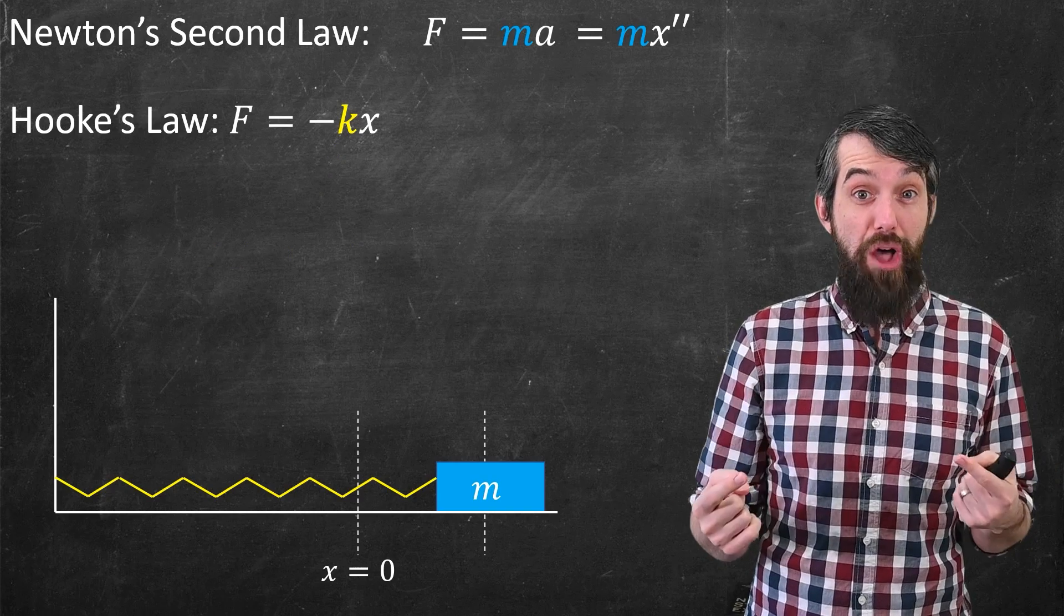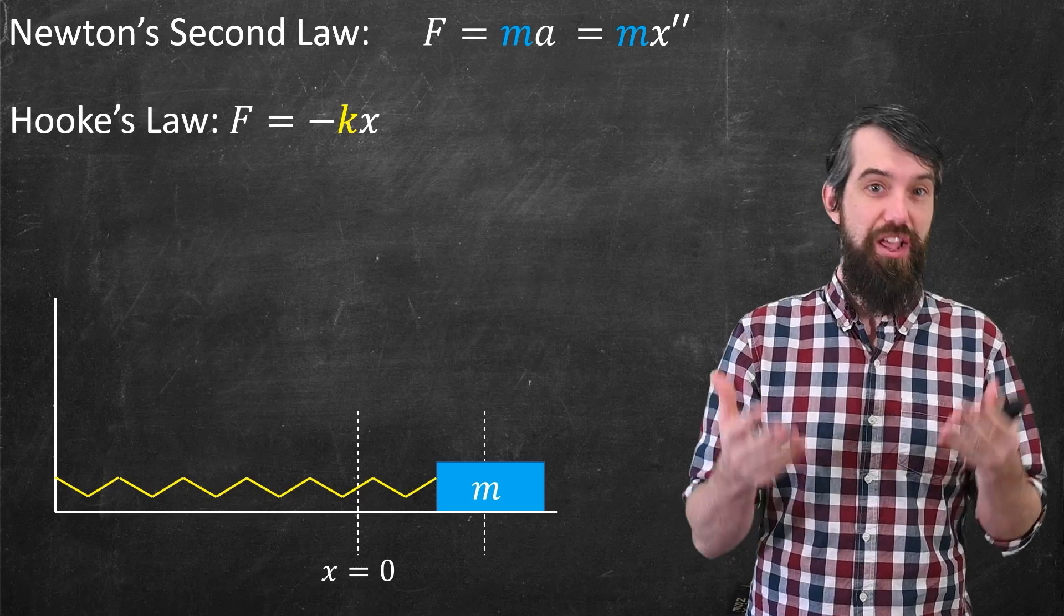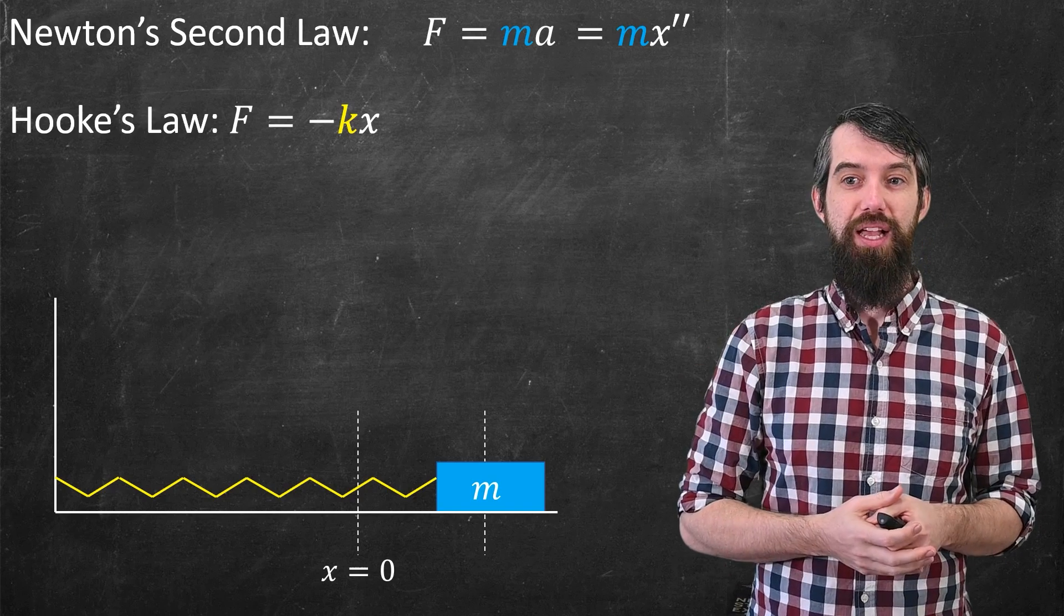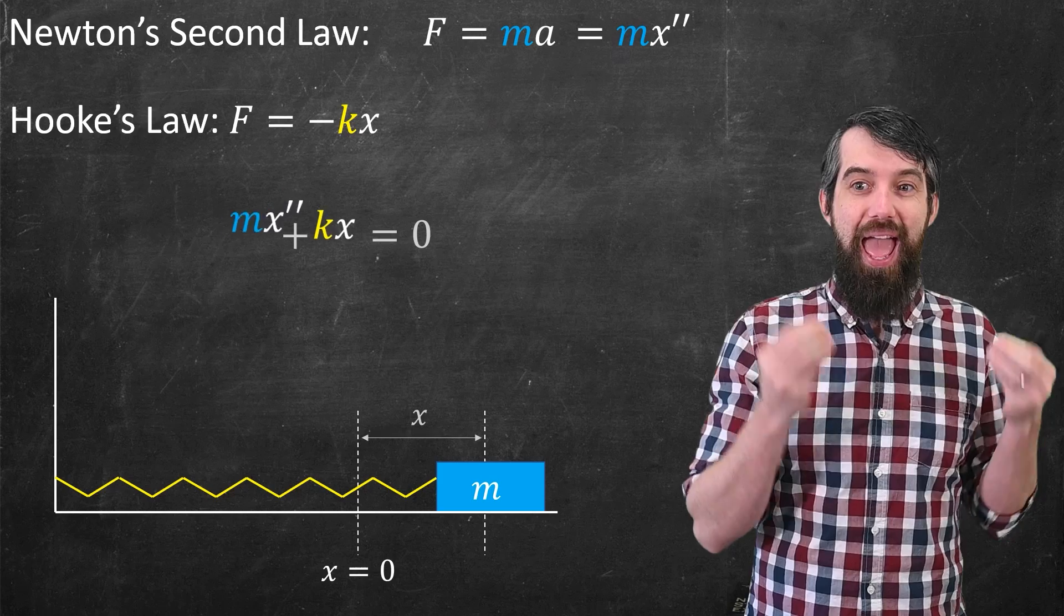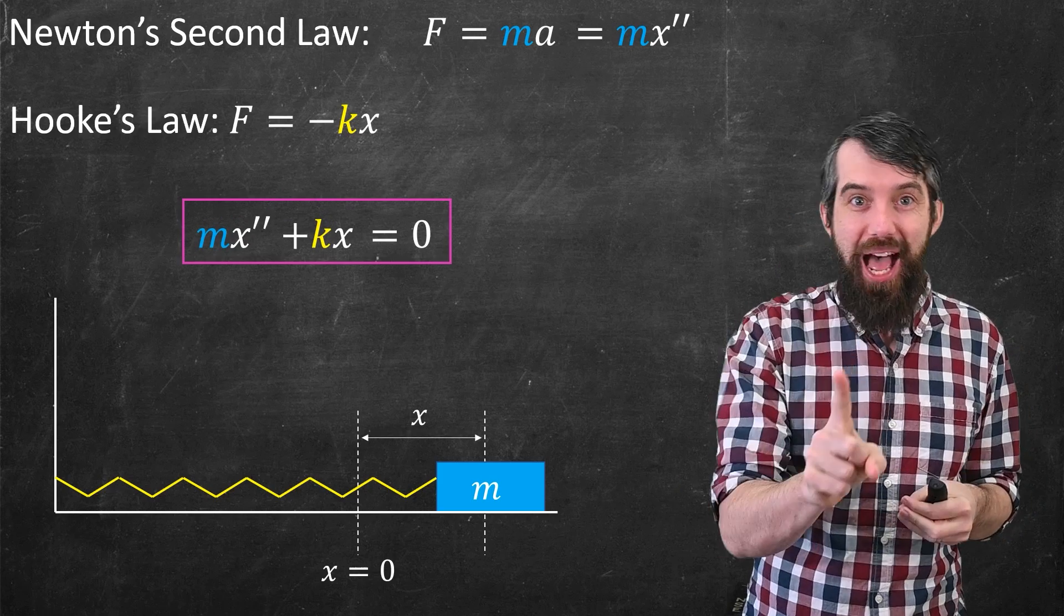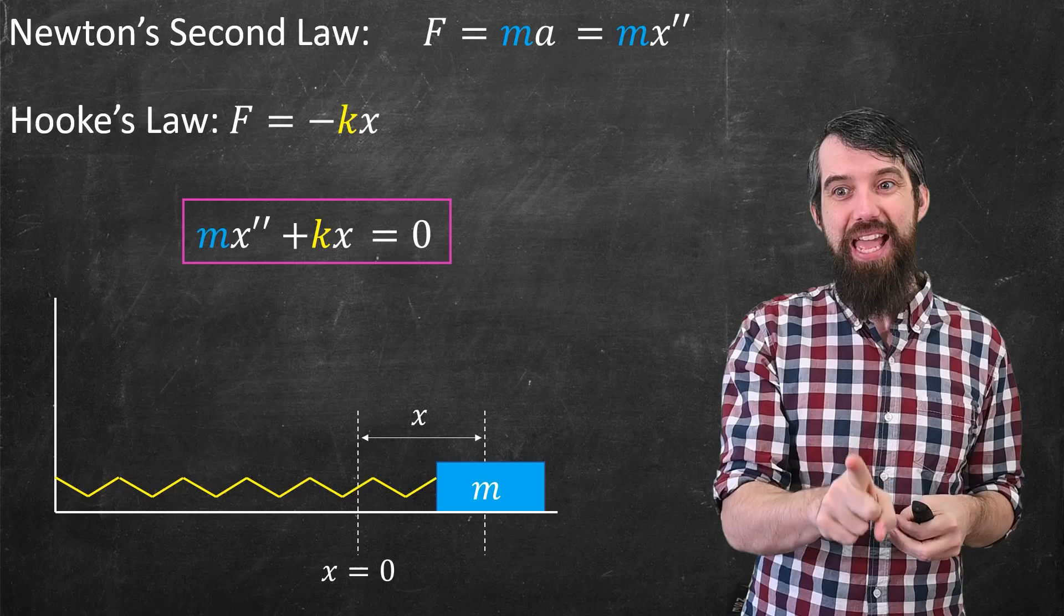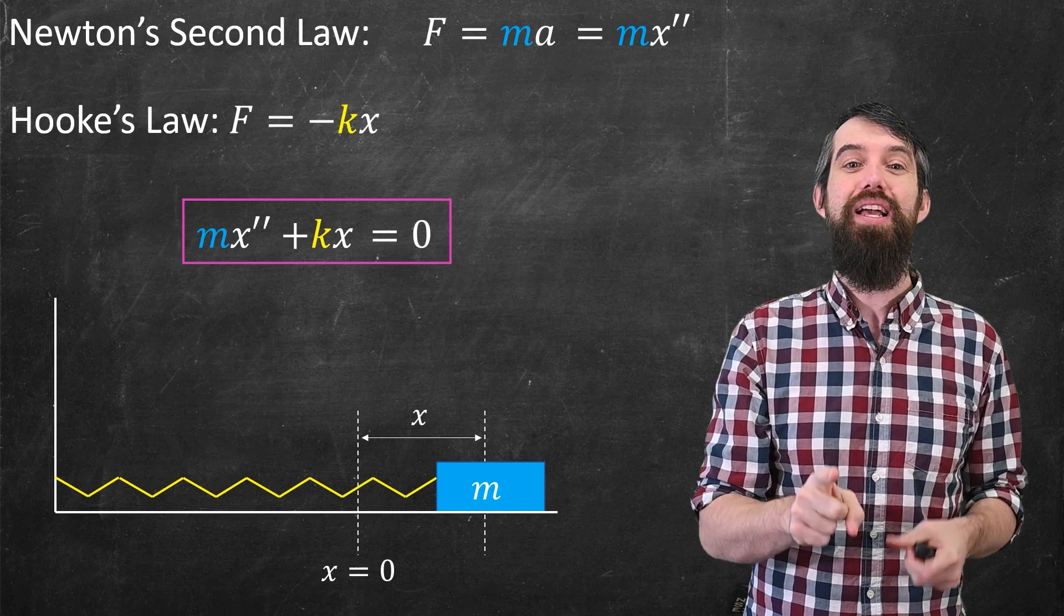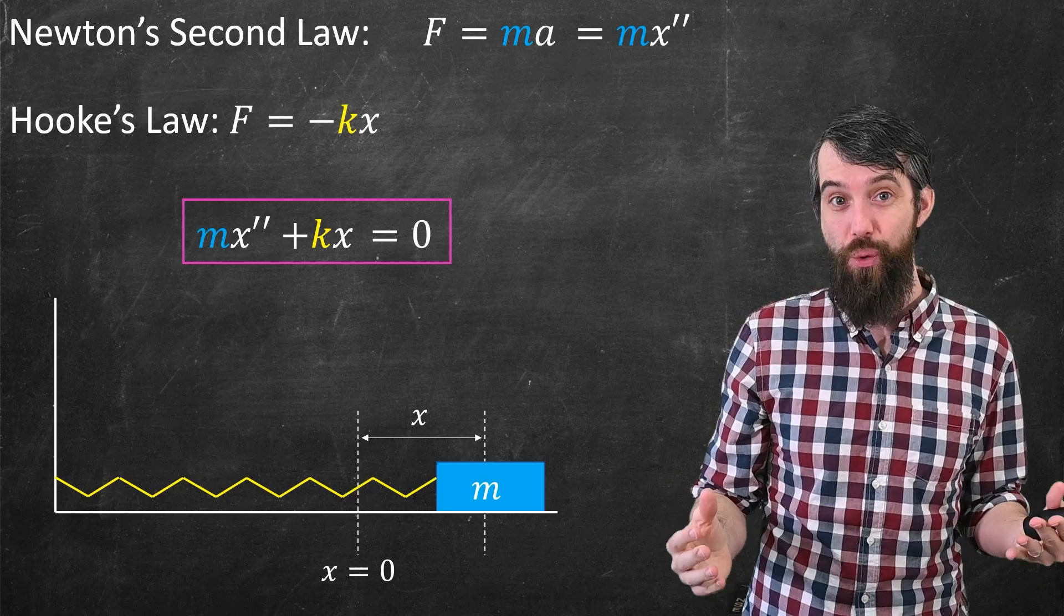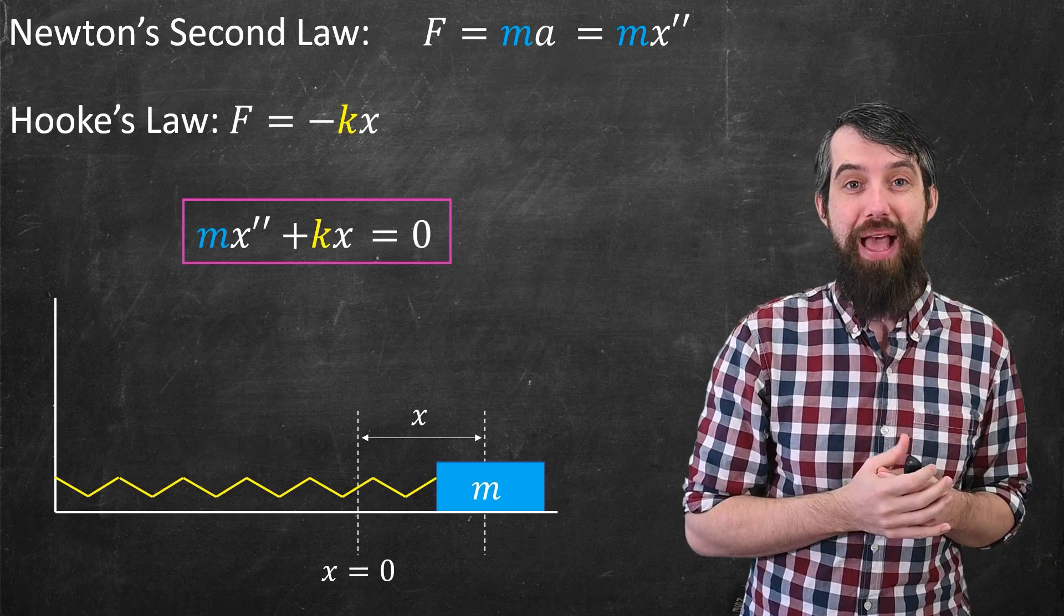So I have the generic Newton's law for forces being mass times acceleration. I have Hooke's law, and I'm going to compare those two things. I'm going to say thus, that mx'' + kx = 0. And that is my differential equation to describe this mass on a spring.